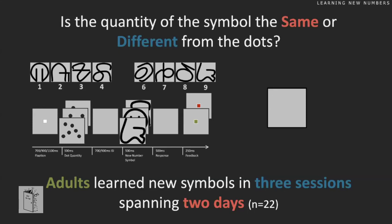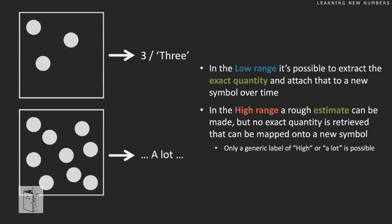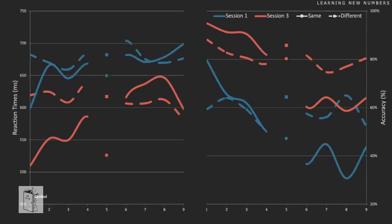What we expected: when participants see three dots they know it's three, but for larger quantities — shown for only half a second, not enough time to count — they're lost. We expected them to learn symbols when they can actually see exactly how many dots there are, and when they can't, we don't expect much learning. They'd just know it's 'a big symbol' without knowing the exact value — could be six, could be seven. And that's more or less what we saw.